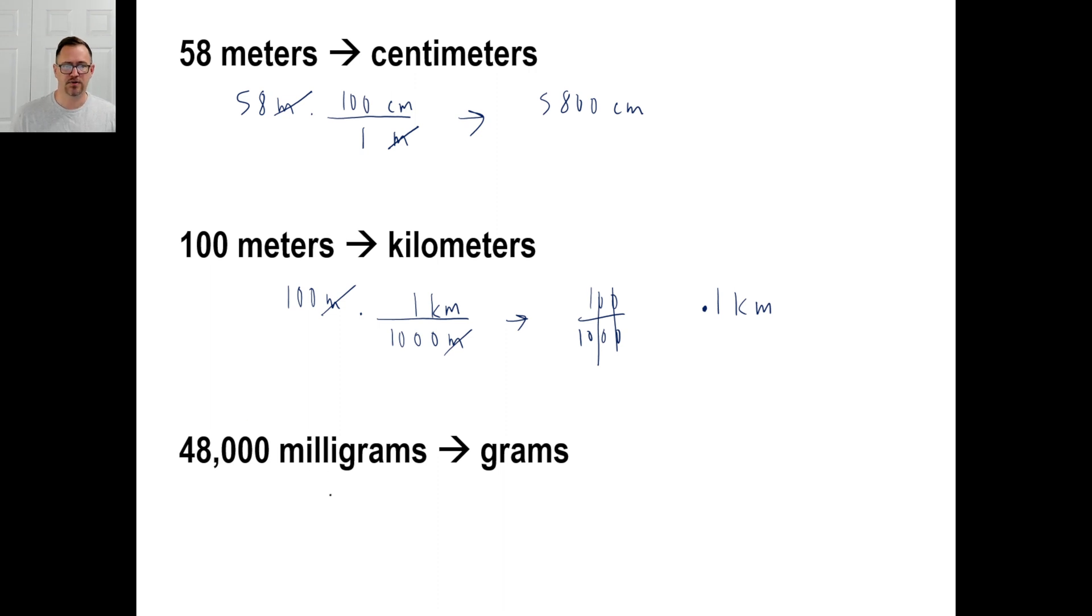All right, milligrams to grams. How many milligrams are in a gram? Thousand milligrams in a gram. So let's just, without even thinking, 48,000 milligrams. All right, no thinking, just write an mg on the bottom and we go a thousand milligrams is equal to one gram. So milligrams go away, 48,000 divided by a thousand is just 48. So the answer is 48 grams.